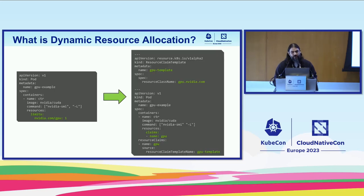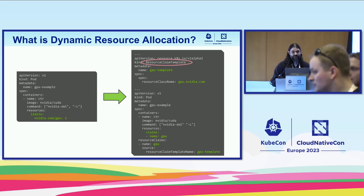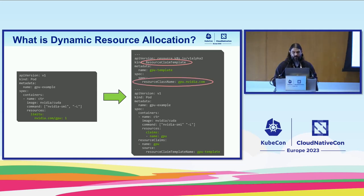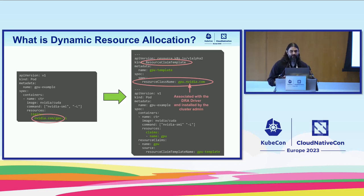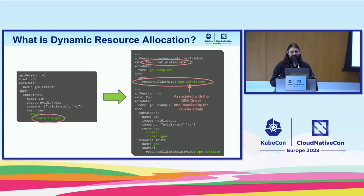Under Dynamic Resource Allocation, a similar allocation would use a separate object from your pod called a resource claim template. Inside that resource claim template, you give reference to a specific resource class — in this case, the resource class name is gpu.nvidia.com. This name gets associated with your driver, is installed by the cluster admin, and is analogous to the resource type nvidia.com/gpu from the device plugin side.